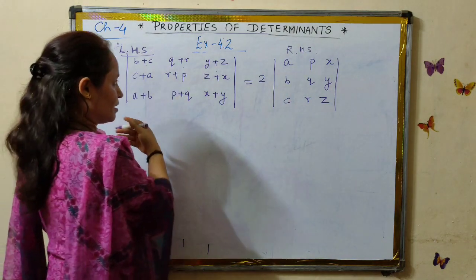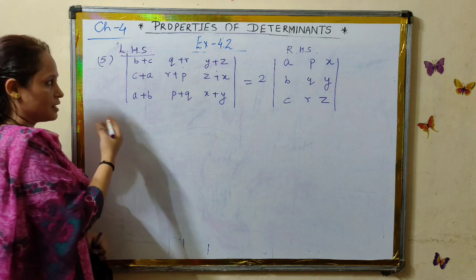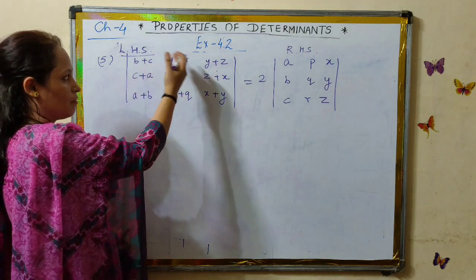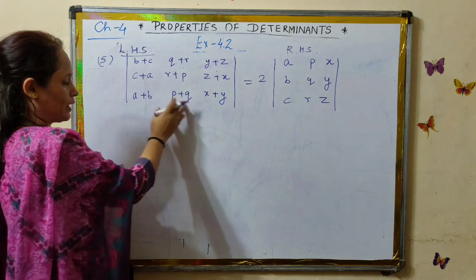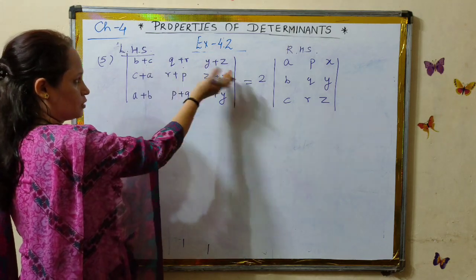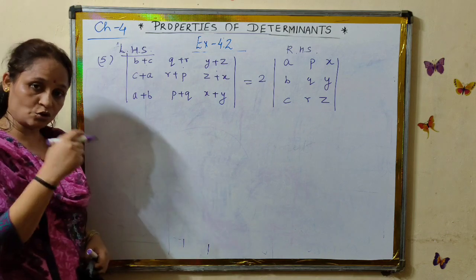You see all the entries are algebraic clearly. And on adding the columns, do we find anything coming out common? No, we do not find anything common when we add all three columns. Now let's go to the rows.